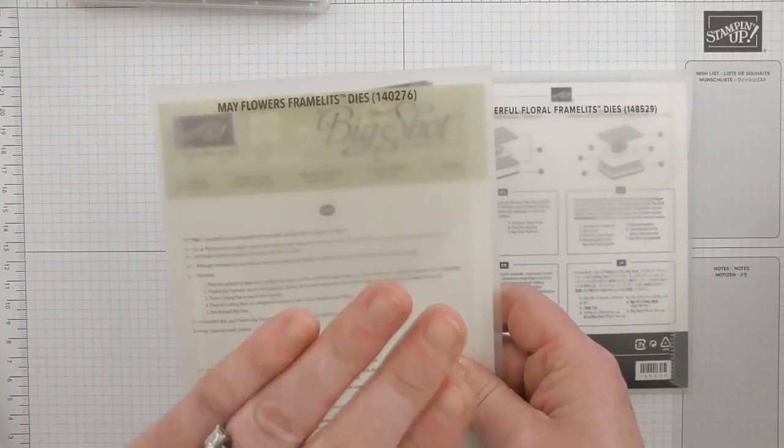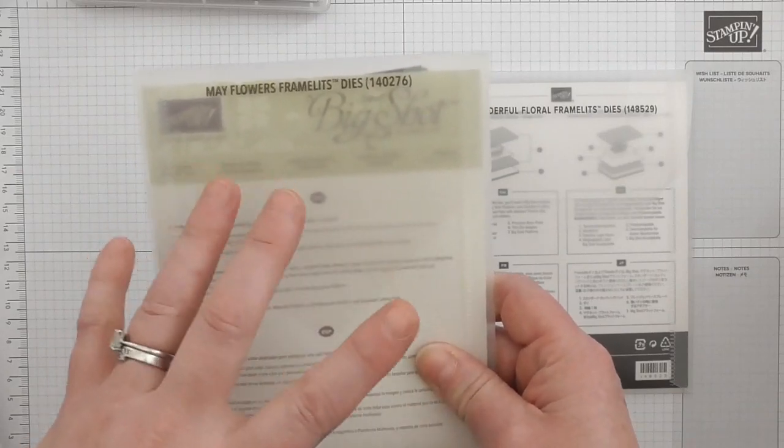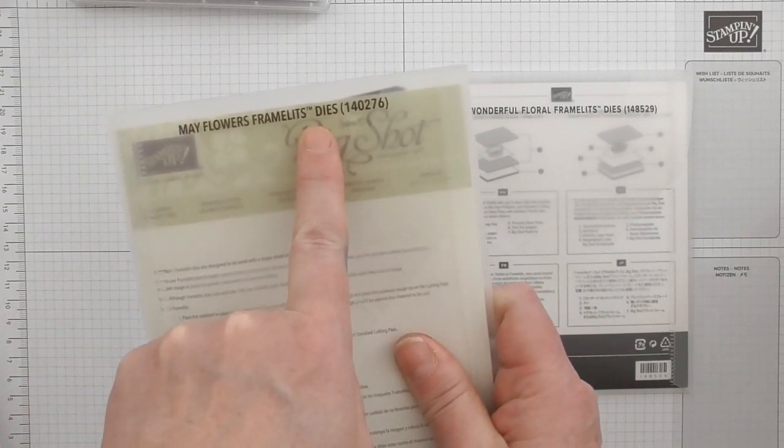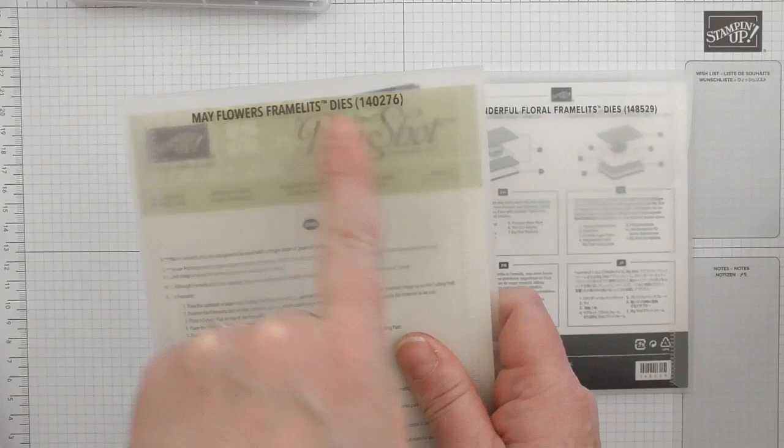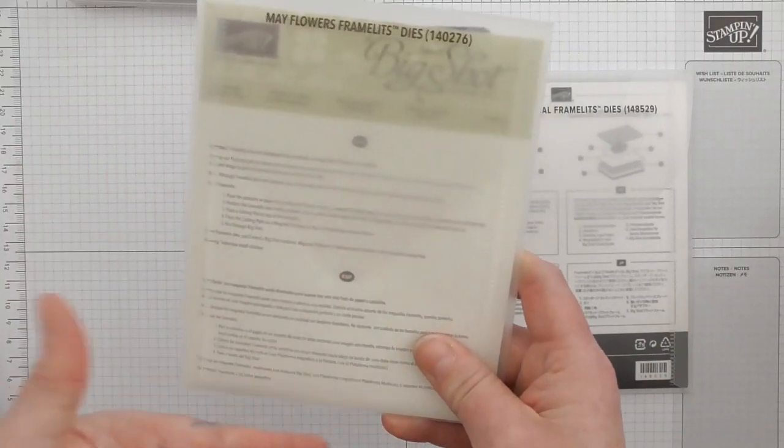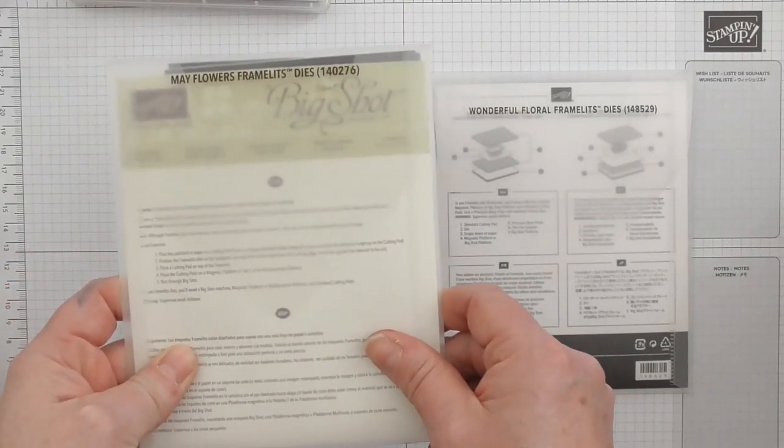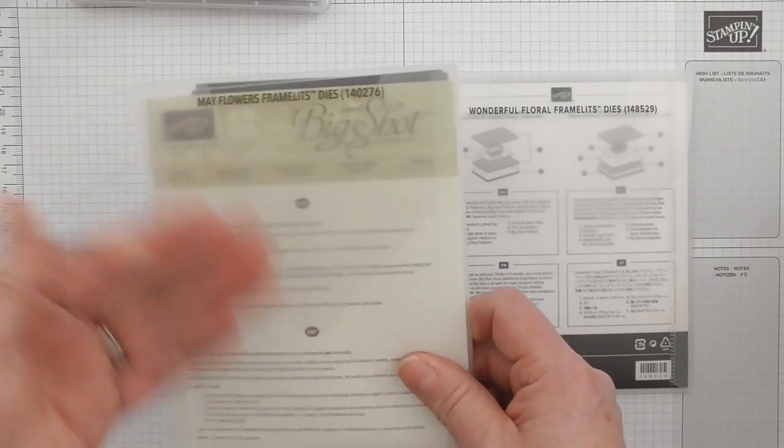I keep them in the wallets that they come in from Stampin' Up. I don't feel it necessary to take them out and store them another way. These are sturdy, it's got the name already written on it, it's already got the order number in case somebody needs it or I want to reorder that item. It's perfect, they're already stored. Why spend extra money, extra time, and extra room on further storage?